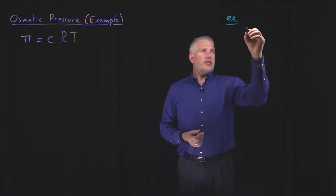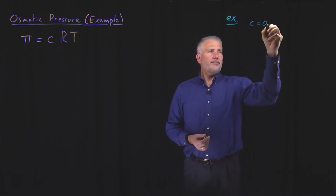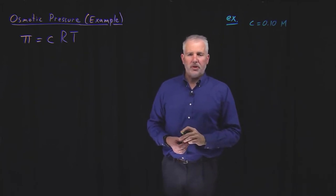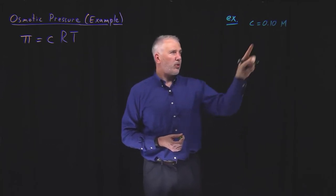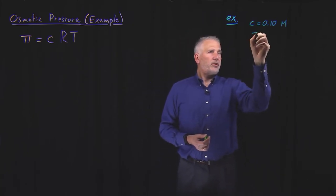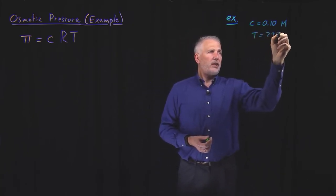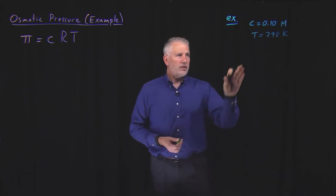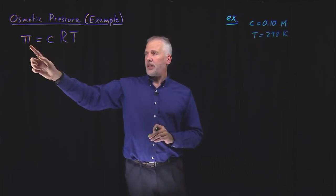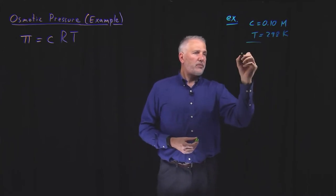So for this example, let's say that we have a solution that is 0.1 molar in some solute. It might be a sugar-water solution, 0.1 molar sugar-water solution. And if our temperature is 298 Kelvin, so our sugar-water solution is at room temperature, that's enough information for us now to calculate the osmotic pressure.